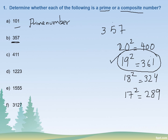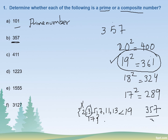Now list the prime numbers less than 19: they are 2, 3, 5, 7, 11, 13, and 17. Check each one. 2 cannot divide 357. For 3: 3 times 1 is 3, 3 times 9 is 27 — that means 3 divides 357. Since a number other than 1 and itself divides 357, that means 357 is a composite number.